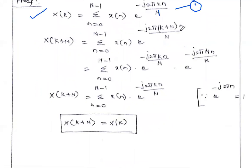In the next step, we split this exponential. The summation from n = 0 to N−1 of X(n) times, splitting the exponent, gives: e^(−j2πkn/N) multiplied by e^(−j2πNn/N). Here the capital N in the numerator and denominator cancel, leaving e^(−j2πn).